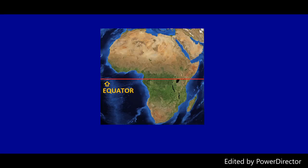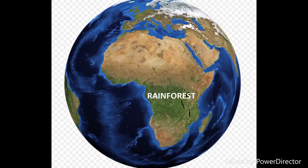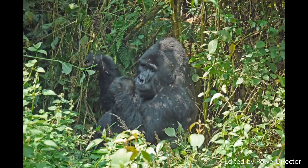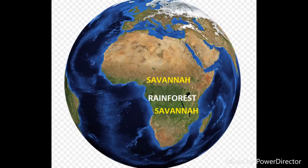Because the equator runs east and west through the middle of the continent, on either side of the equator there is a band of rainforest with hot, humid weather and rain every afternoon. This much rainfall in these areas causes dense, lush vegetation.